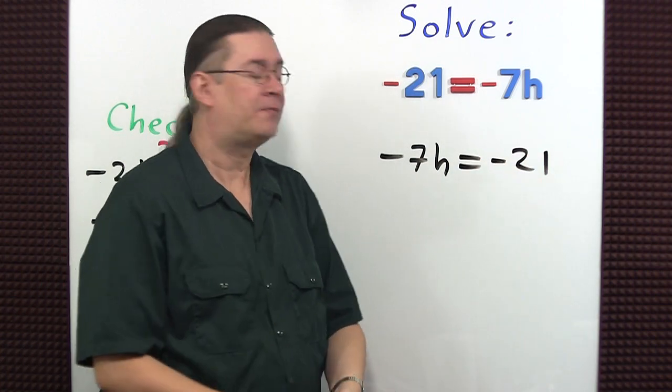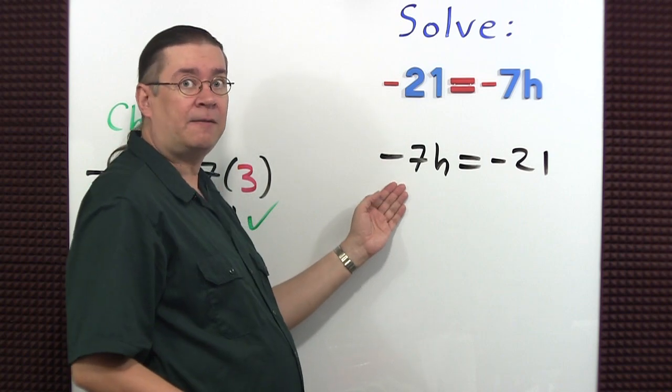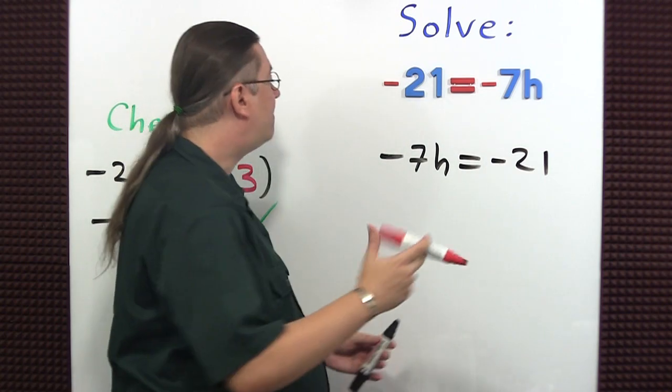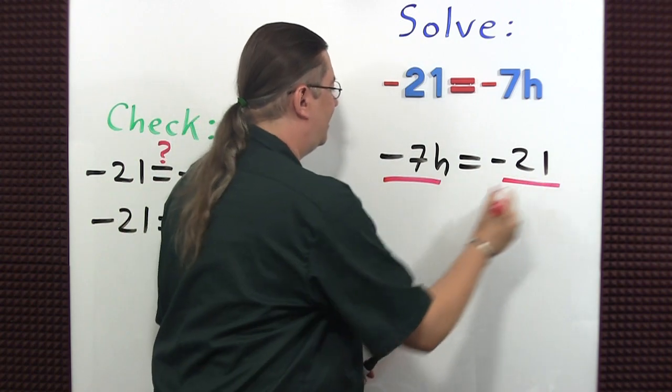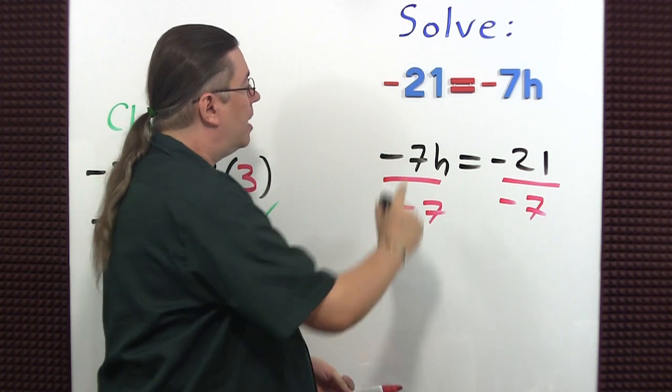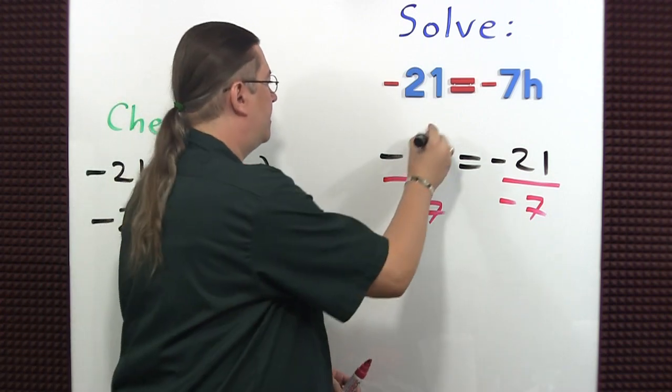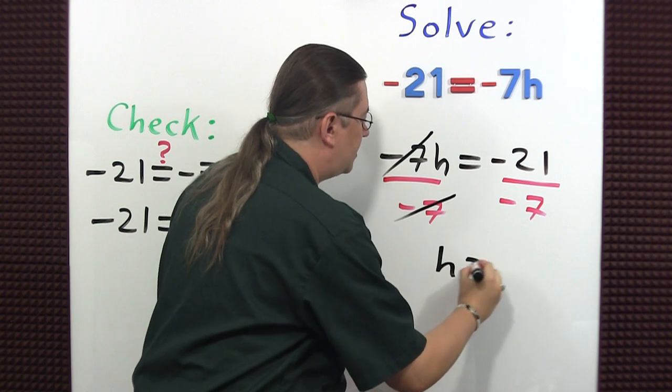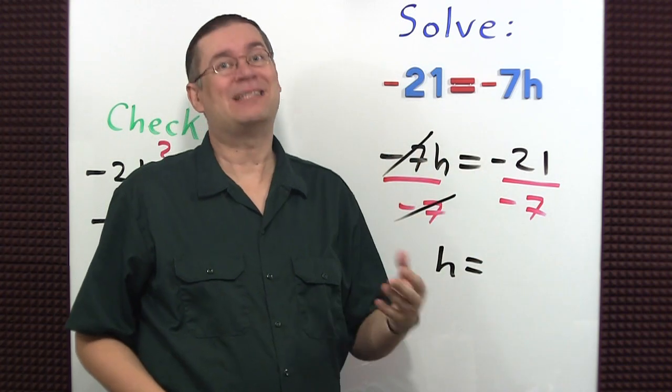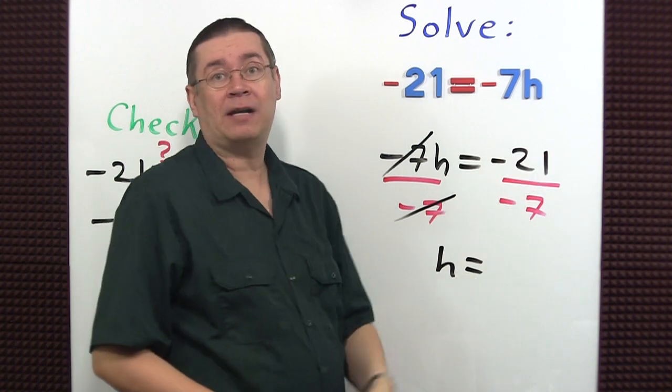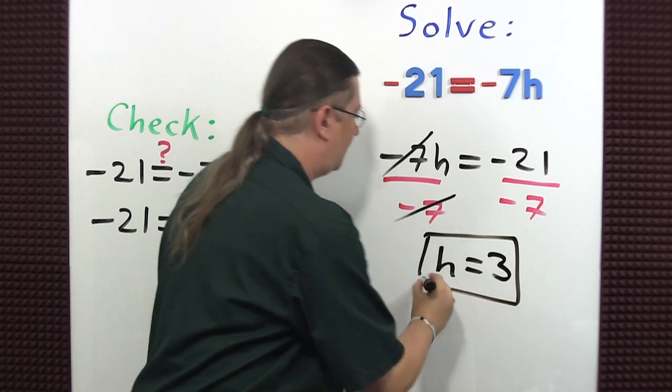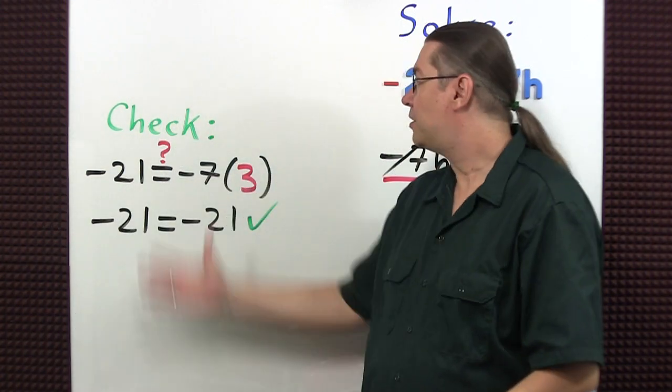Now let's just solve. The variable H is being multiplied by negative seven. So to remove a multiplication, we use division. Let's divide both sides by negative seven. The number divided by itself is one times H is H. Let's just zap those out. H equals, don't forget, negative divided by negative is positive. 21 divided by seven is three.